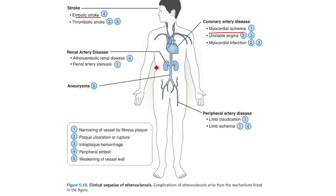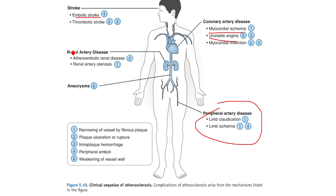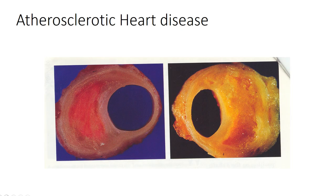With significant lesions, we can see limb claudication, unstable angina, or ischemia during exercise, and you can even see effects on the renal arteries. When we develop atherosclerosis and cardiovascular disease, we don't just develop it in one arterial system.